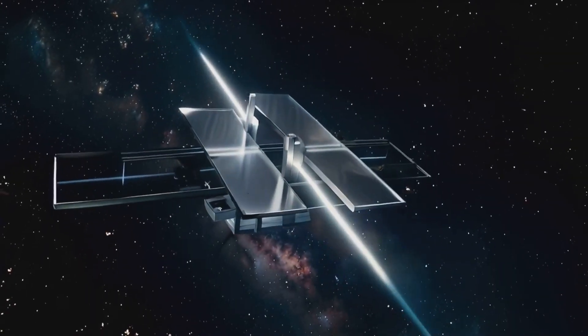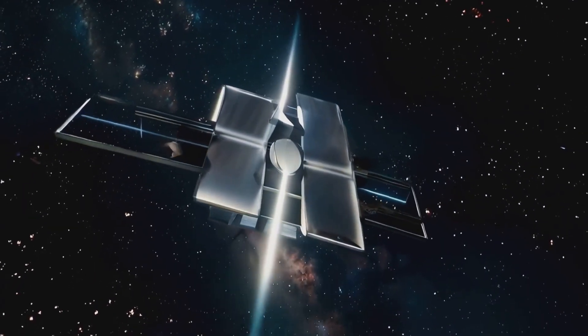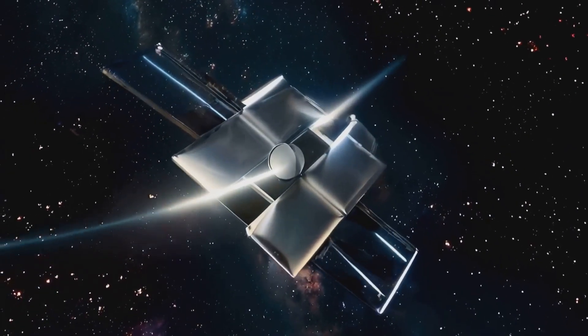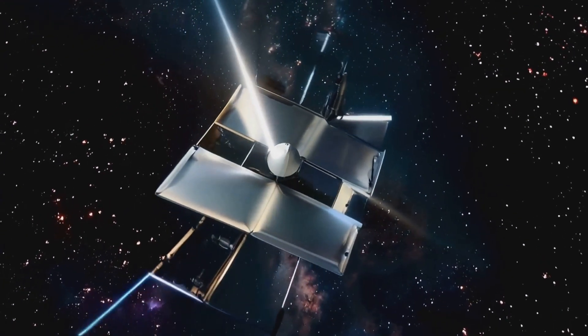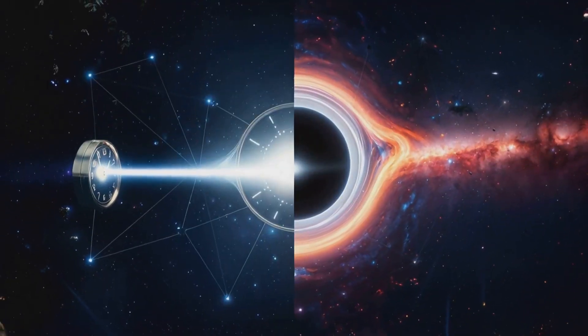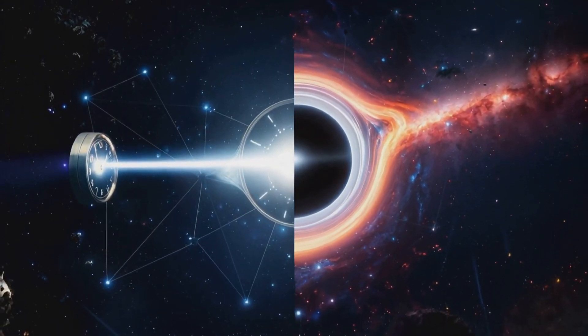Let's start with the concept of a light clock. Envision two mirrors spaced apart with a beam of light bouncing between them. Every time the light completes a round trip, it marks a tick of the clock. This simple device underpins our understanding of time in relativity.